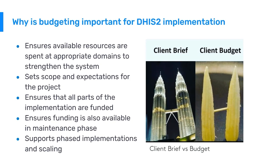Writing a good budget also sets scope and expectations for the project. Doing a budget as a collaborative exercise between different partners really highlights how much money you have versus the activities you plan, and sets expectations ahead of the project. It also ensures that all parts of the implementation are funded — very often there is funding available for configuring DHIS2 but not enough to sustain it over time.